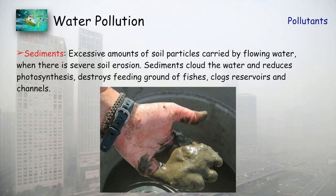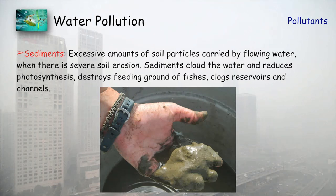Now let's talk about the pollutants. The first is sediments — excessive amounts of soil particles carried by flowing water or soil erosion accumulate at the end of the river. Sediments generally reduce the quality of the water, decrease photosynthesis, destroy feeding grounds for fish, and clog reservoirs and channels.